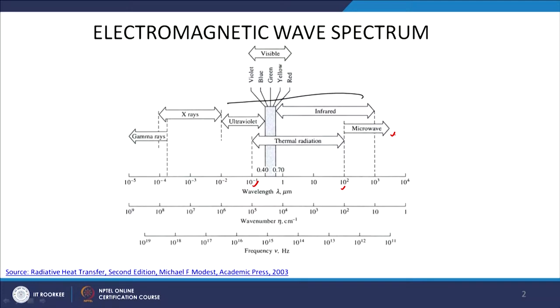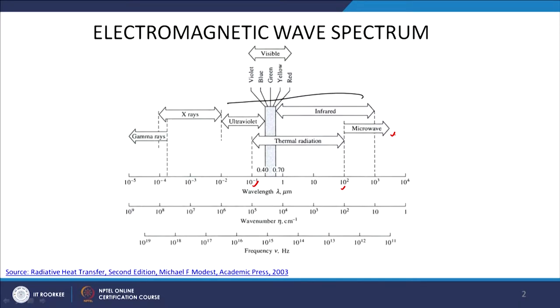There is some nomenclature popularly used in atmospheric radiation. The wavelength intervals are represented in microns. The wavelength region from 0.1 micron to 4 micron is basically called short wave radiation. This short wave radiation comprises ultraviolet, visible, and near infrared. So this 0.1 to 4 micron wavelength region is called the short wave region.